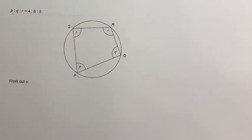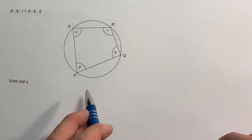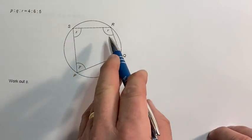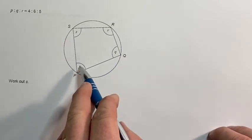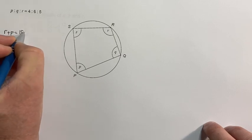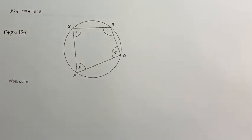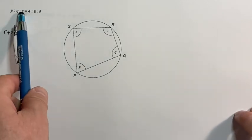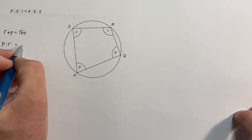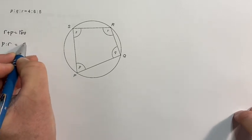Now this is an interesting one because it brings in ratio and angle properties. We know that if I leave s out for the time being, r and p, r plus p must add up to 180 degrees because we've got a cyclic quadrilateral. Well, r and p, the ratio of p to r is 4 to 5.